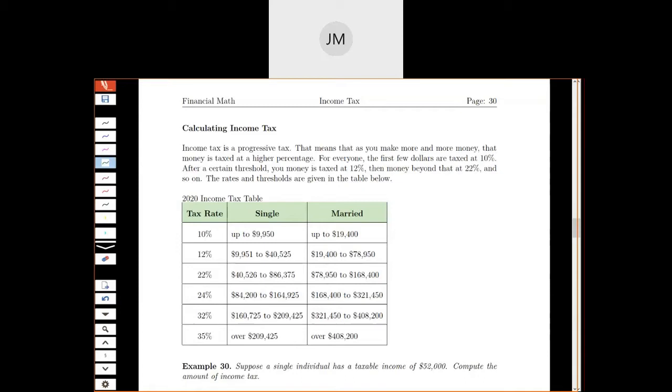Federal income tax is a progressive tax. That means that as you make more and more money, it's taxed at a higher percentage.